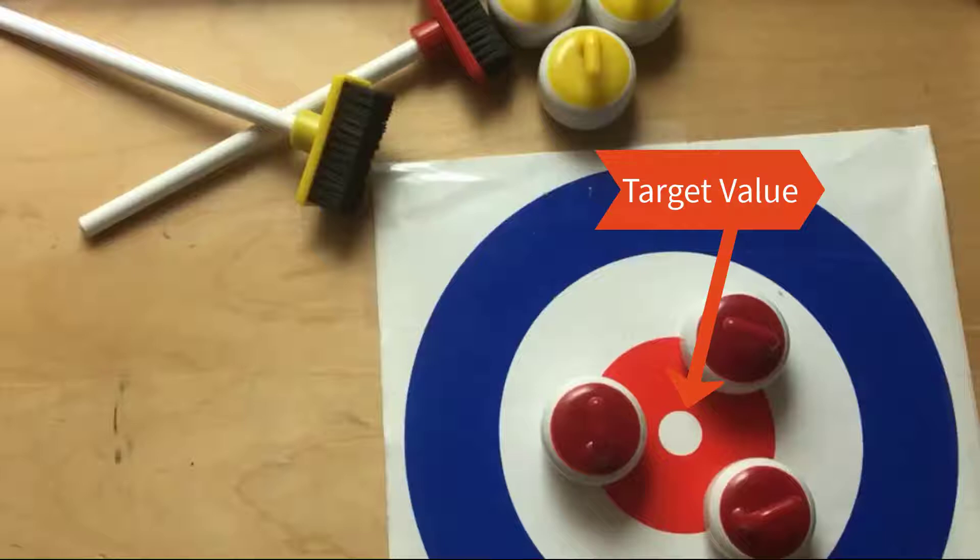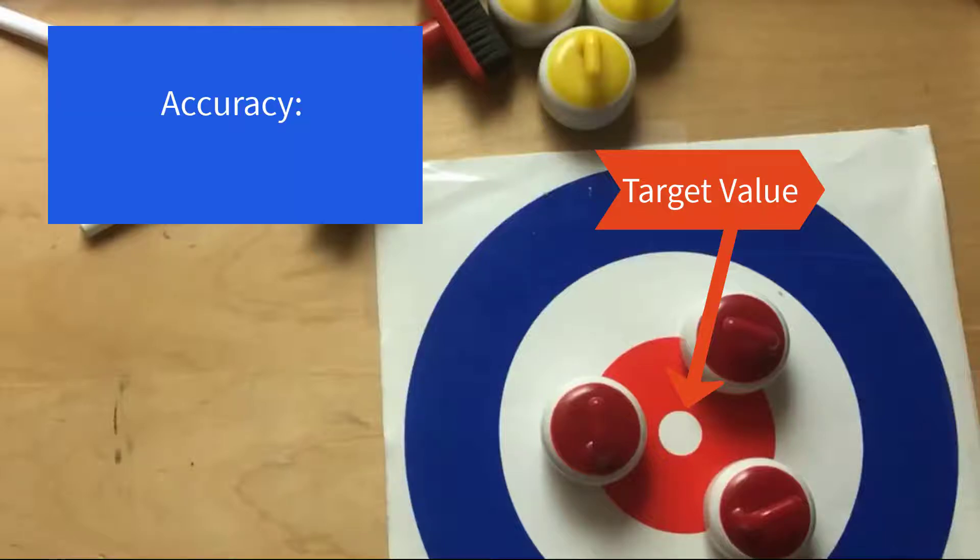As you can see, our measurements, or in this case, our curling stones, landed near our target value. Making measurements near the target value is important in scientific experiments, and so scientists refer to measurements near a target value with a special term: accuracy. Accuracy refers to how close a measurement is to the target value.